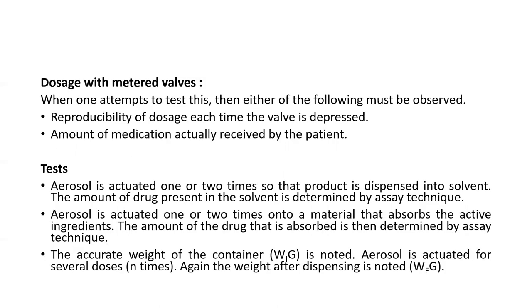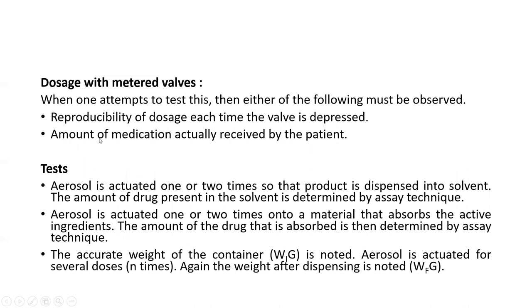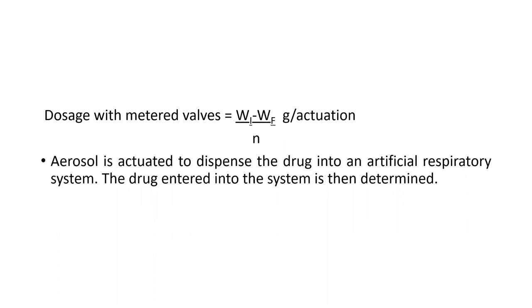The second identification test is the amount of medication actually received by the patient. The first method is an external method. This is an internal method where we want to identify how much medication the patient has actually received. For that, the aerosol is actuated into an artificial respiratory system, and the drug that enters into the system is then determined.